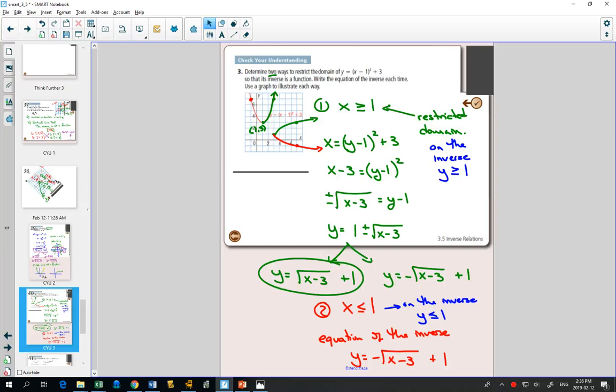These questions are almost always only with parabolas, and you always restrict your domain based on the vertex. So wherever your vertex is, to the left of that is one restricted domain, to the right of it is the other one. Okay, questions for practice? Try number 10 and 12.